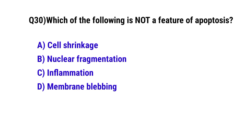Question number 30. Which of the following is not a feature of apoptosis? The correct option is C. Inflammation.